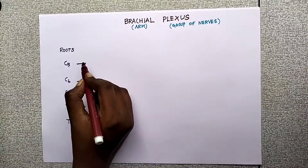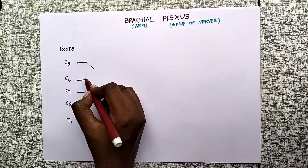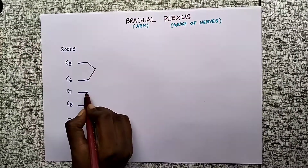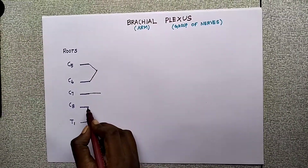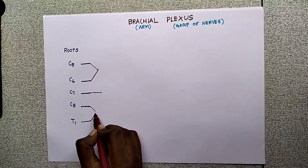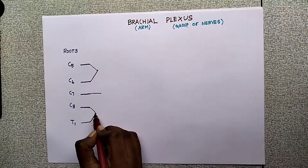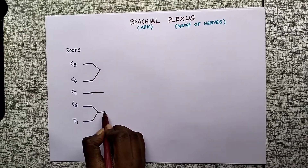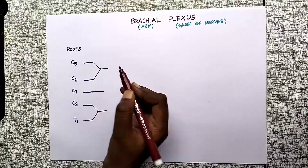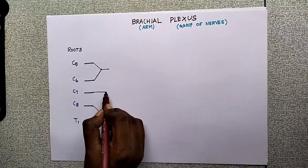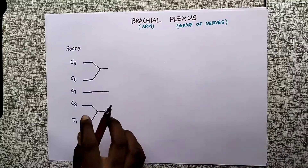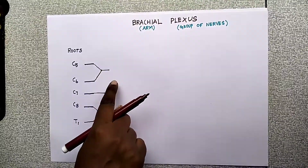The upper trunk is formed by C5 and C6. The middle trunk is formed by C7. The lower trunk is formed by C8 and T1. So there are three trunks: upper, middle, and lower.